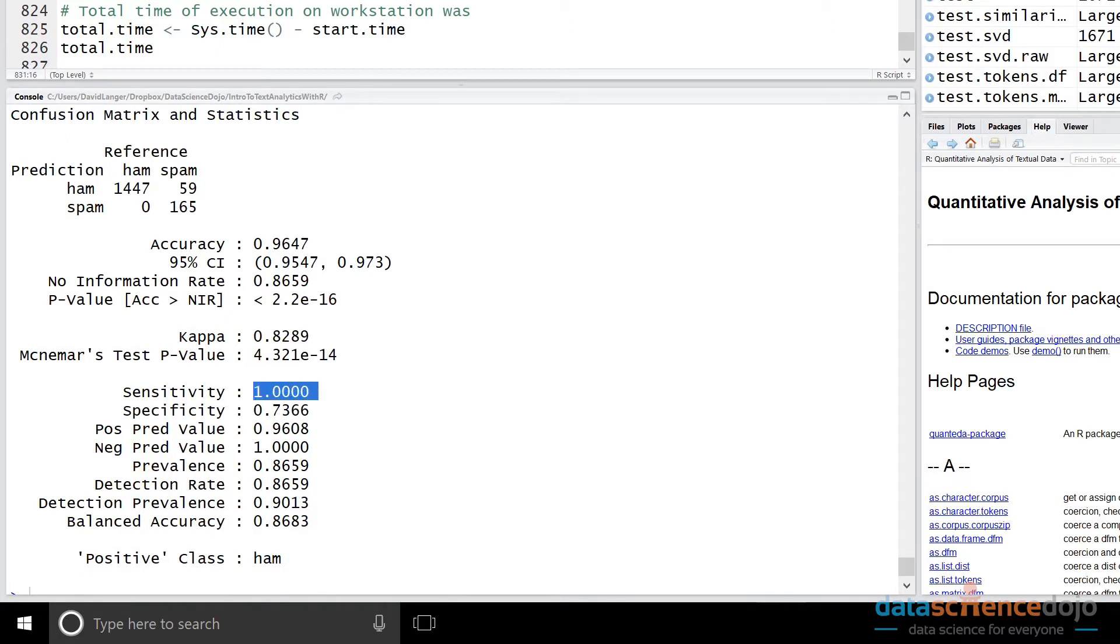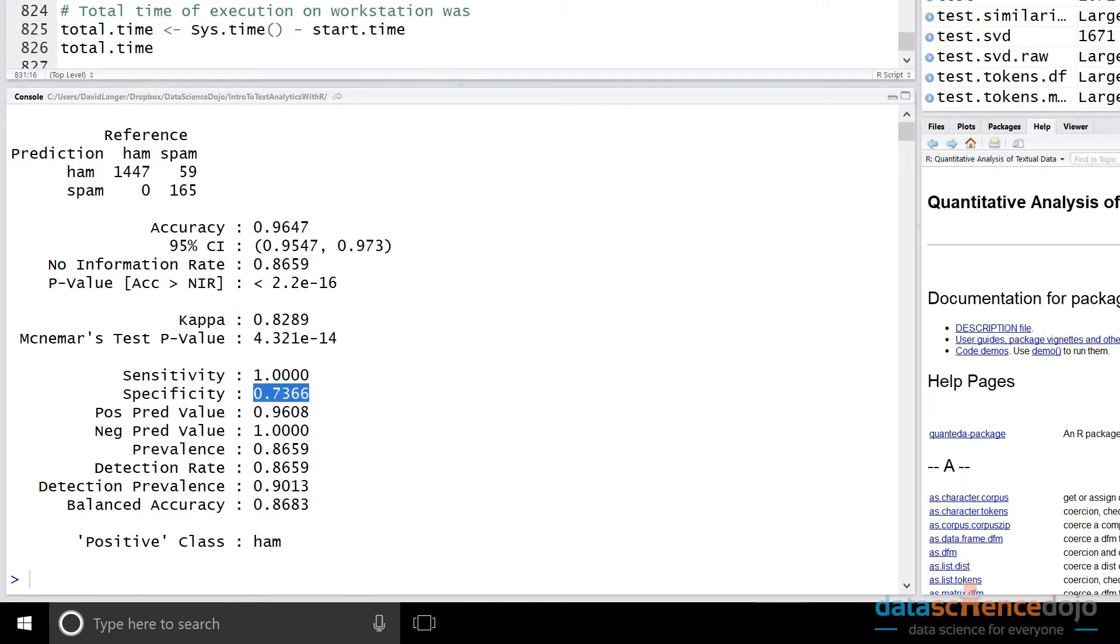So almost a 10% jump in accuracy by removing the spam similarity feature. So we kept text length in, and then we had our 300 features that we engineered, that we extracted using singular value decomposition, latent semantic analysis. And you can see here that we get a generalization score very close to what we saw with our training data using our 10-fold cross-validation run with the text length added, but not the spam similarity feature added. And this is good because what this does is this is a strong indication that we have built a generalizable model.